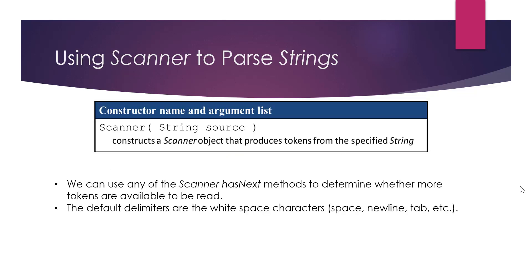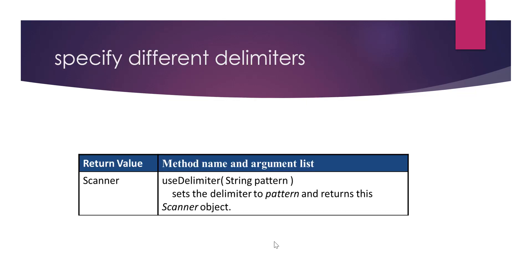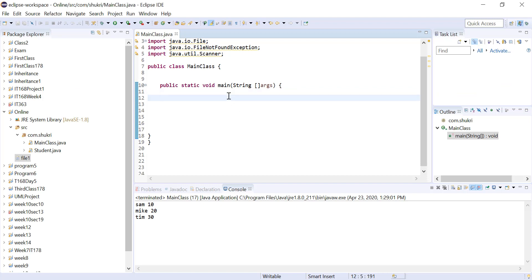Once we read a line from our file, we can store it in a string, and this string can be used as the source for another Scanner that reads from it. This inner Scanner will use the comma separator to read values from that line. We can use the hasNext method to check for more tokens, but since the default delimiter is white space, we need to call useDelimiter with the pattern — passing a comma — to specify our separator.